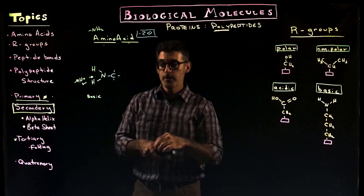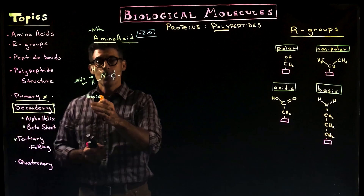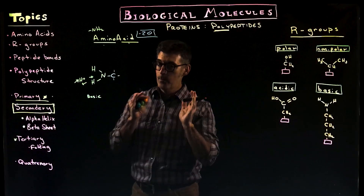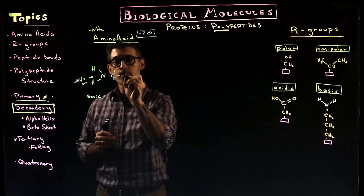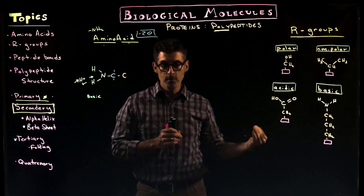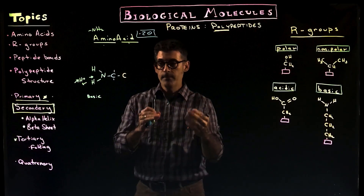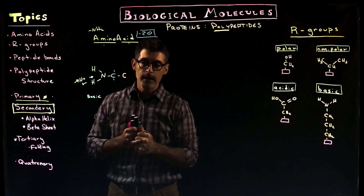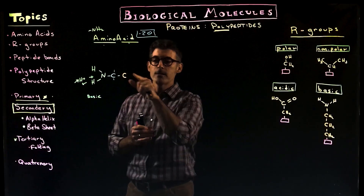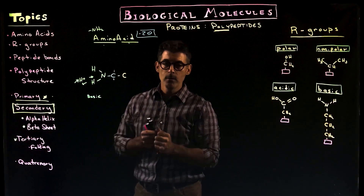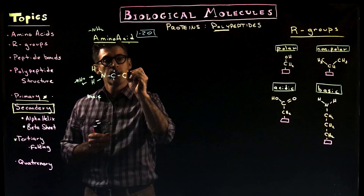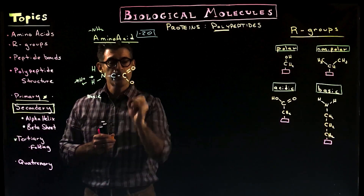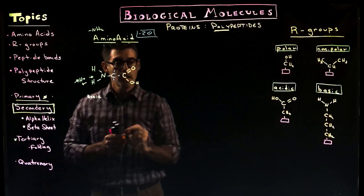Amino and then acid — I already mentioned — is the carboxyl group. When you draw a carboxyl group, it has a carbon that's part of the functional group. If you forget the carbon and just draw the other oxygens, it's incorrect — the number of bonds won't make sense. This carbon, which is part of the carboxyl group, has a double bond to an oxygen and a single bond to an oxygen, which is a hydroxyl group with an OH.